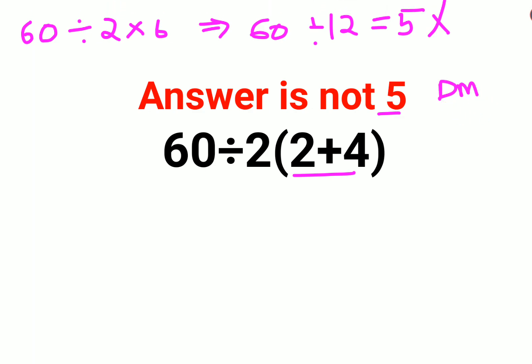BODMAS or PEMDAS, whatever you follow. Always remember, division and multiplication hold equal precedence. So whenever you have a sum like this which has division as well as multiplication, then you should always go from left to right.